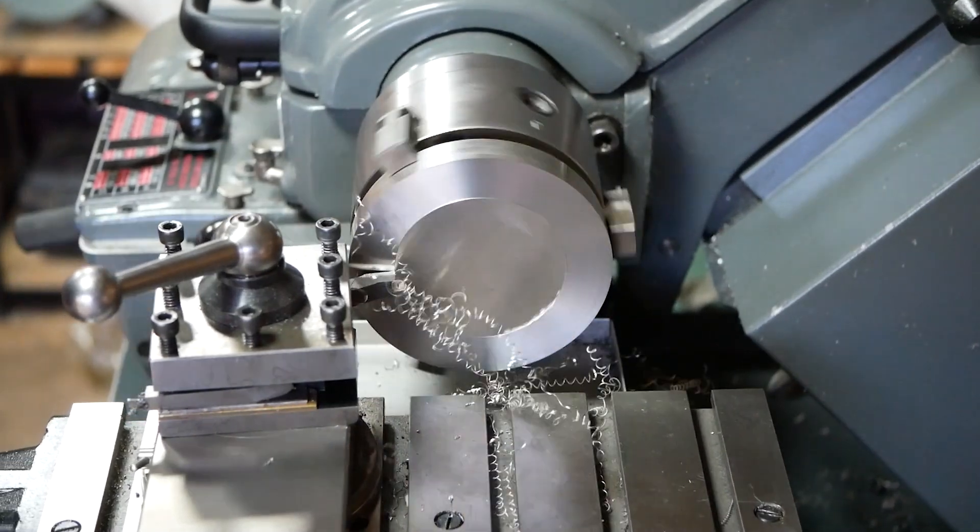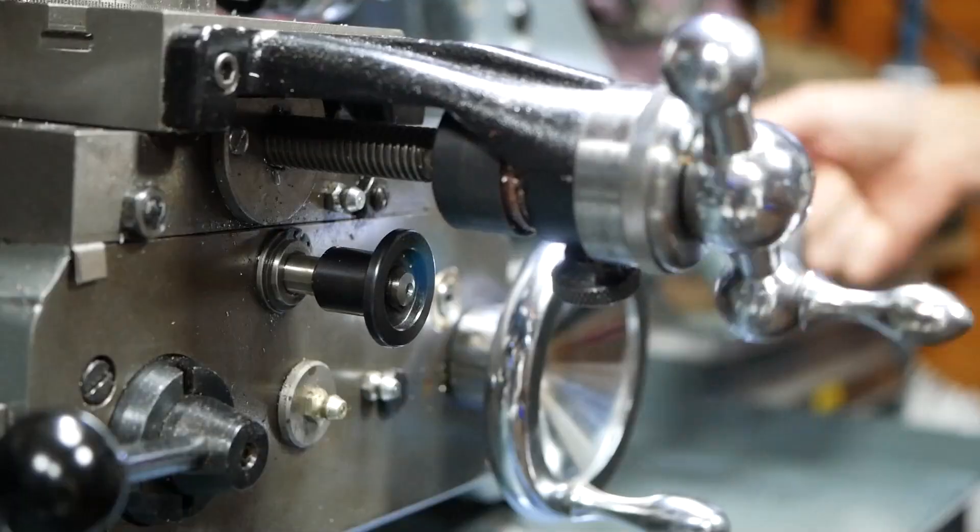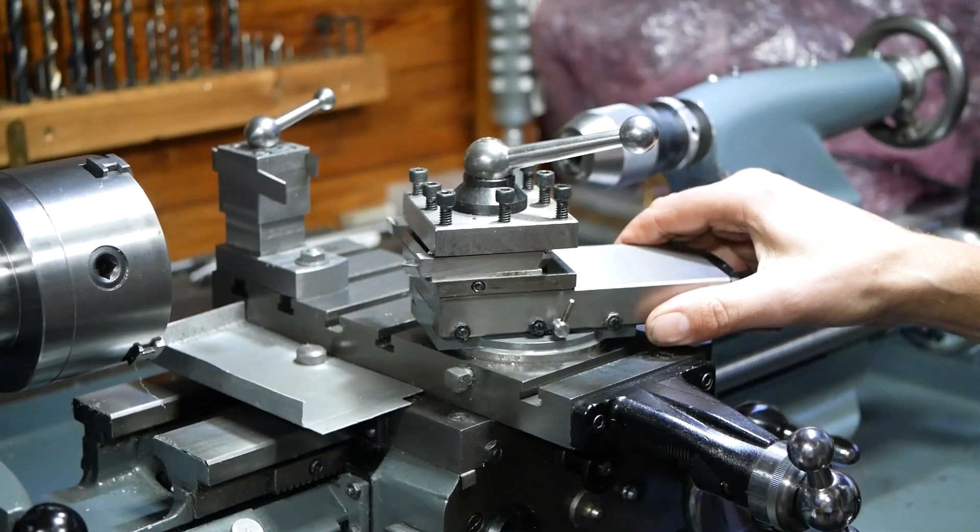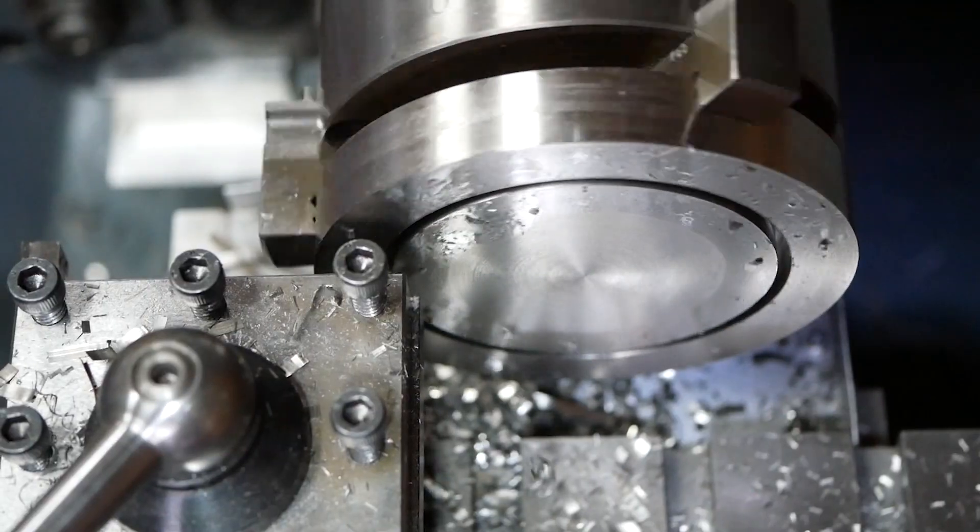Some parts of the lathes are easily modified to metric, like the cross slide and top slide feed screws, but a conversion to a metric lead screw would be less trivial.